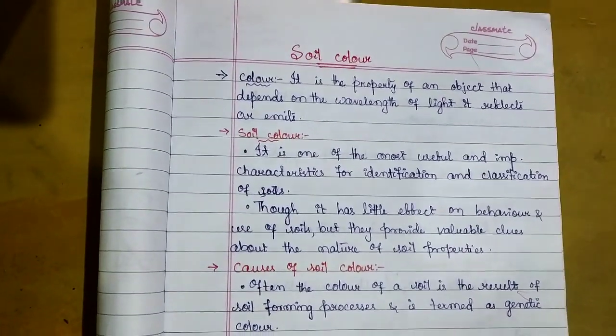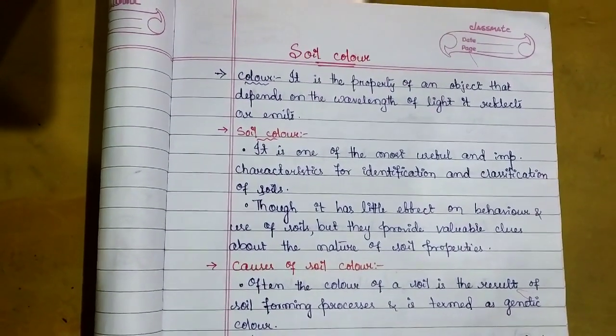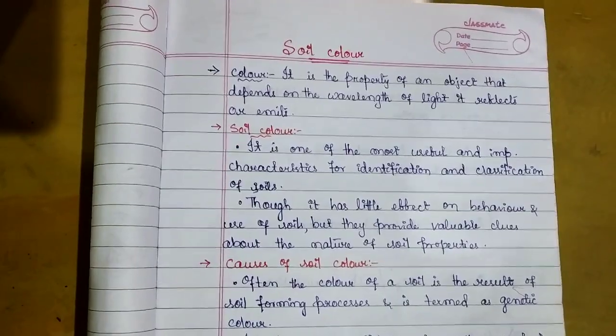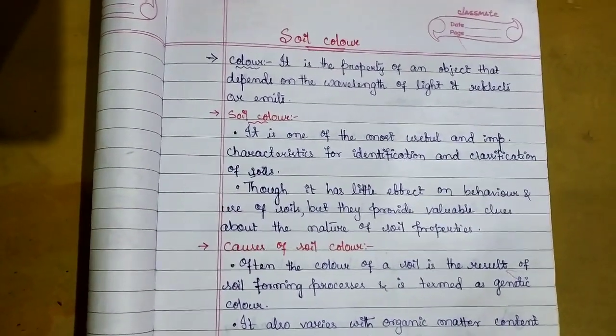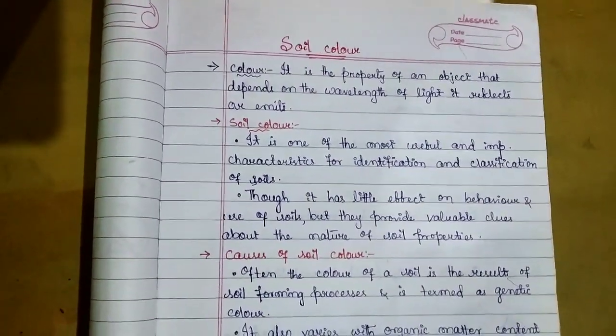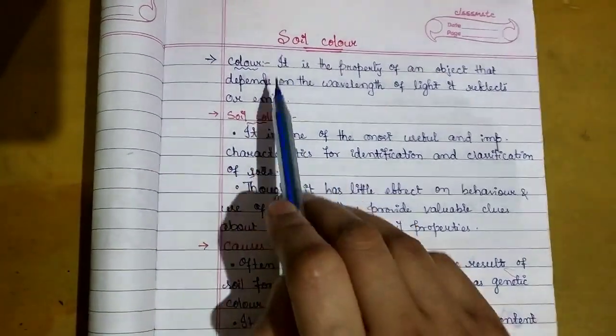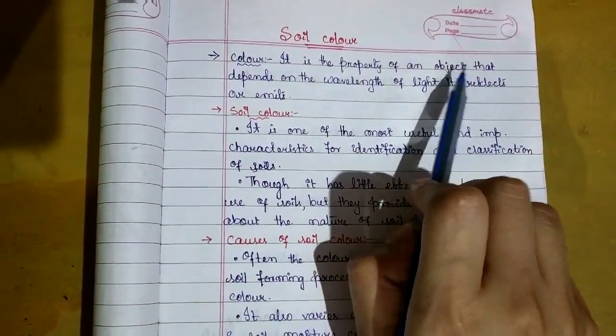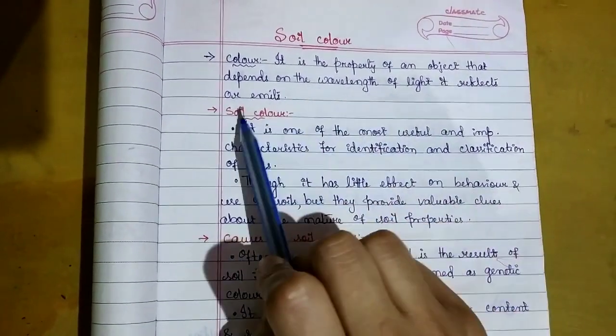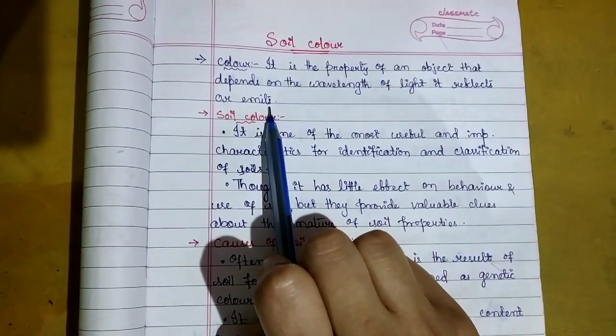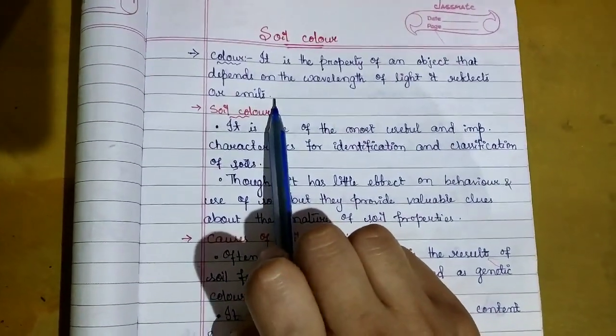Hello friends, welcome to my channel. Today we are going to discuss soil color. What is color? It is the property of an object that depends on the wavelength of light it reflects or emits.